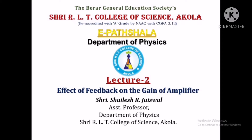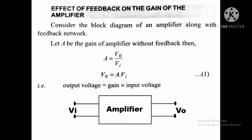Now we have to discuss the effect of feedback on the gain of amplifier. Let's consider the block diagram of amplifier with feedback and without feedback. In this slide, this is the block diagram of amplifier without feedback — no feedback network has been used. In this block diagram, the input is Vi and the output is V0.